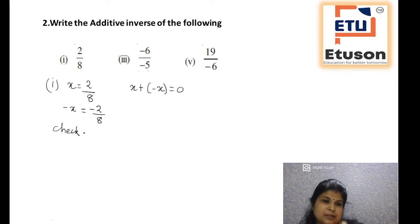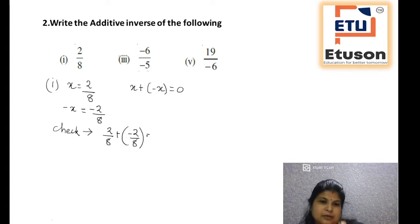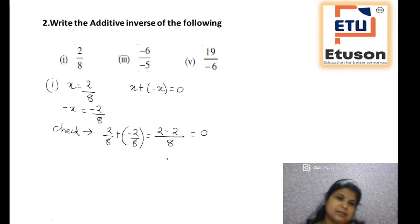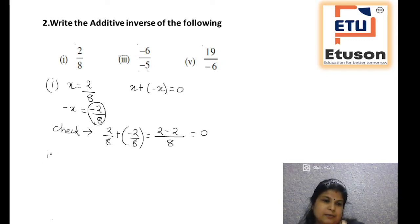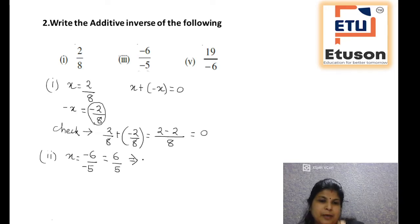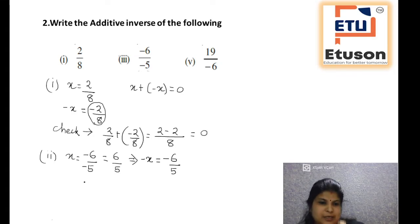To check: 2 by 8 plus minus 2 by 8 — denominator is 8 — 2 minus 2 equals 0 divided by something, which is 0. So additive inverse of 2 by 8 is minus 2 by 8. For the second bit: x is equal to minus 6 by minus 5, which is nothing but equal to 6 by 5. So minus x is equal to minus 6 by 5. Check: 6 by 5 plus minus 6 by 5 gives 6 minus 6 equals 0.